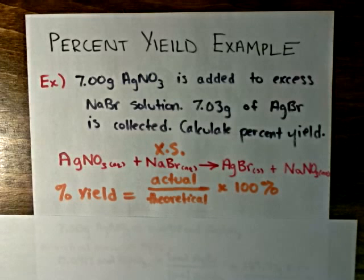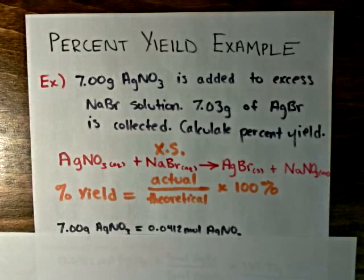So 7 grams of silver nitrate is equal to 0.0412 moles of silver nitrate.